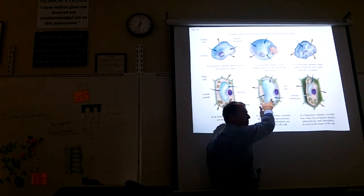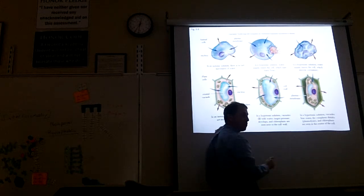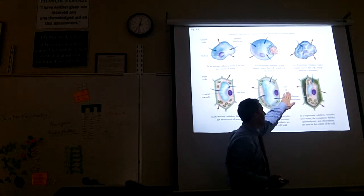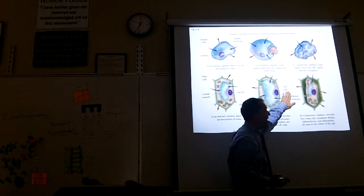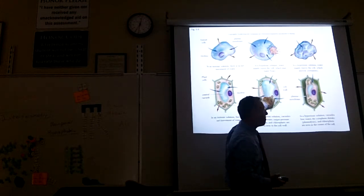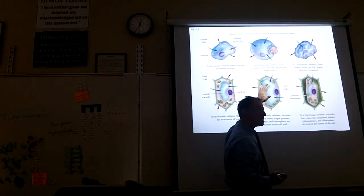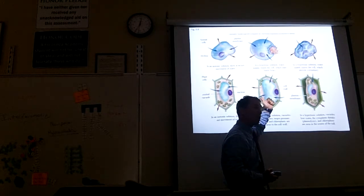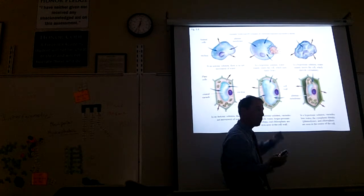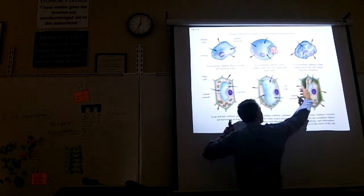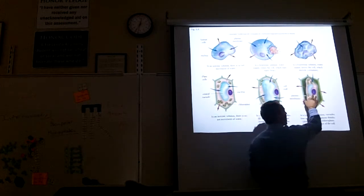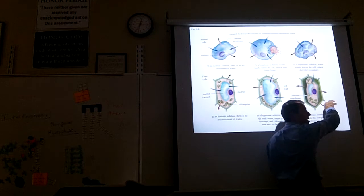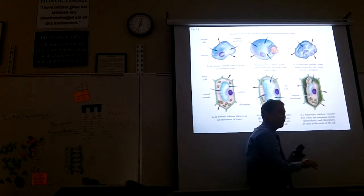This cell is in a hypotonic solution, meaning the outside of the cell has a lot of water. That means inside the cell is hypertonic — there are more sugars or dissolved substances inside than outside. Water always moves toward the hypertonic area, so water will rush into the cell. In a hypertonic solution, the cell is in water with a lot of sugars and solutes, so water rushes out and the cell shrinks.